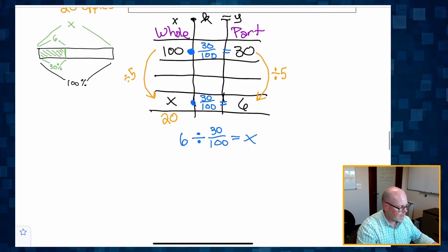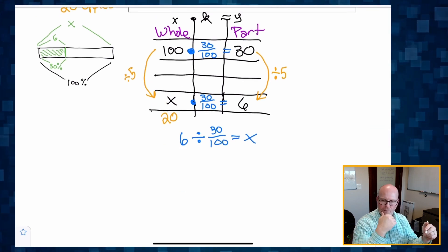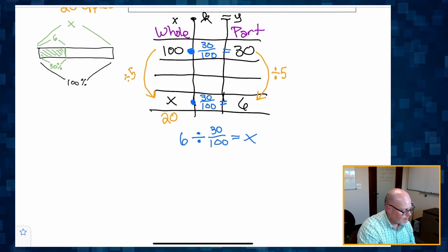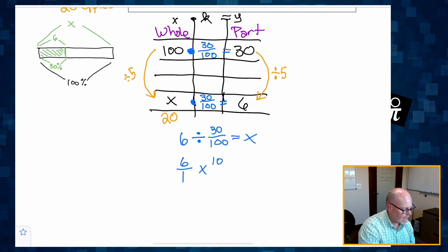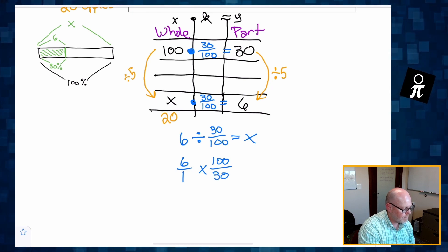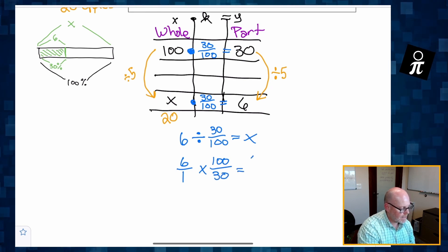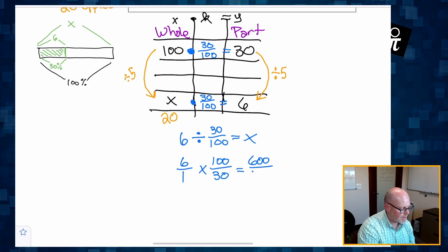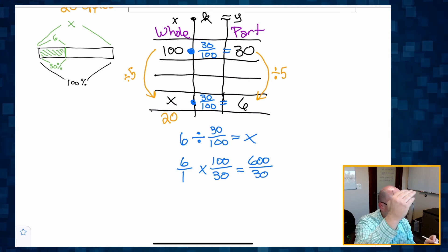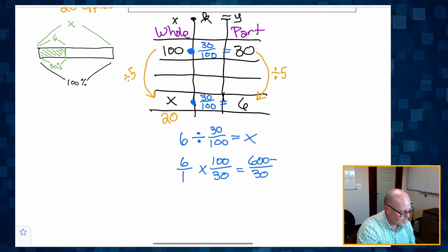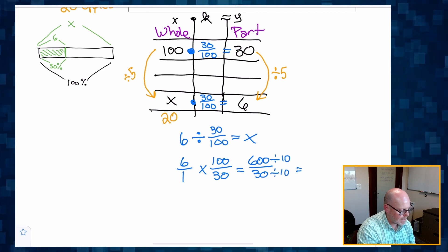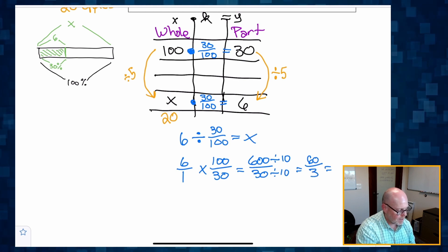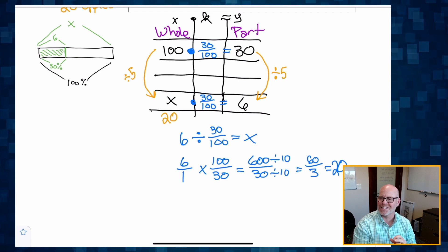And so how do we divide fractions? Well, we just kind of remember that we're going to put six over one. We're going to multiply by the reciprocal. And in this case, we're going to get 600 divided by 30. We can divide both numbers by 10, the numerator and the denominator by 10. That gives us 60 over three, which gives us, I'm going to squeeze this in, it gives us 20.